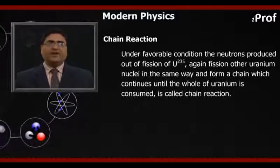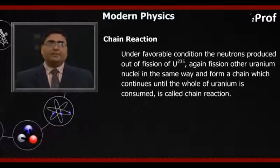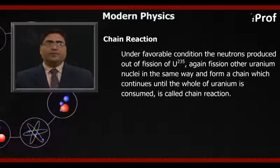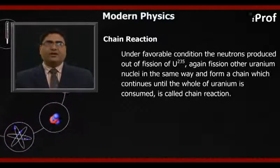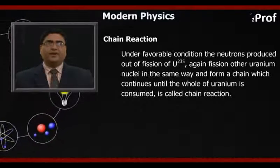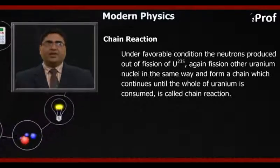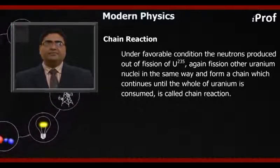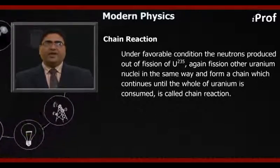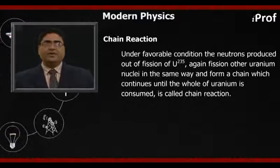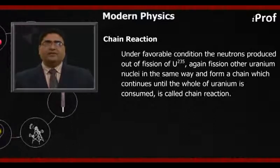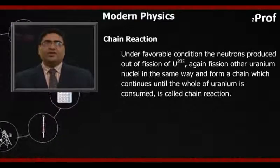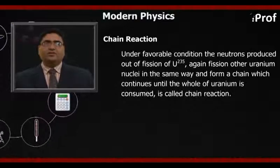Under favorable conditions, the neutron produced out of fission of uranium-235 again fissions other uranium nuclei in the same way and forms a chain, which continues until the whole of the uranium is consumed. This is called a chain reaction.